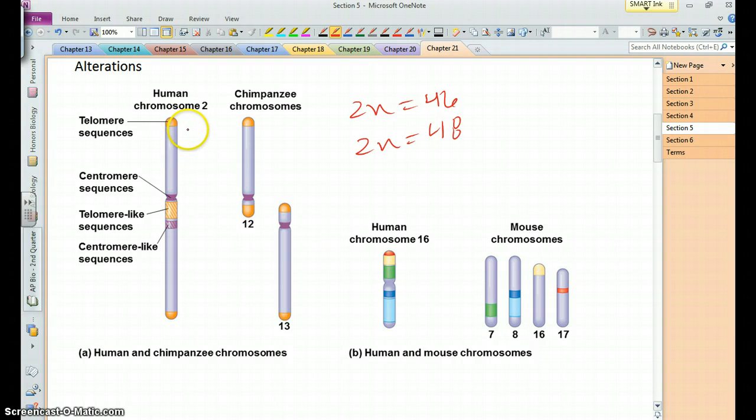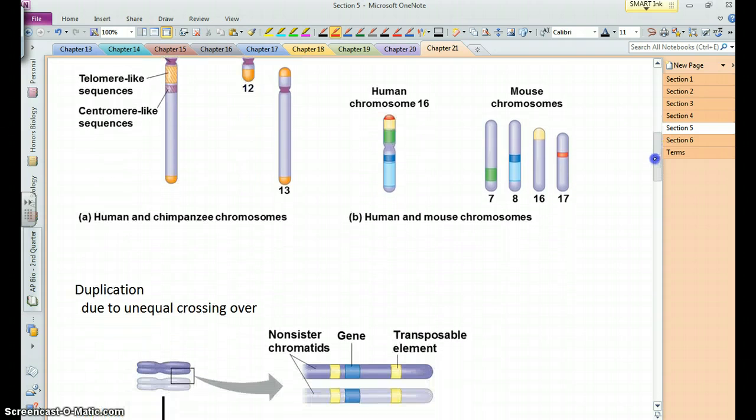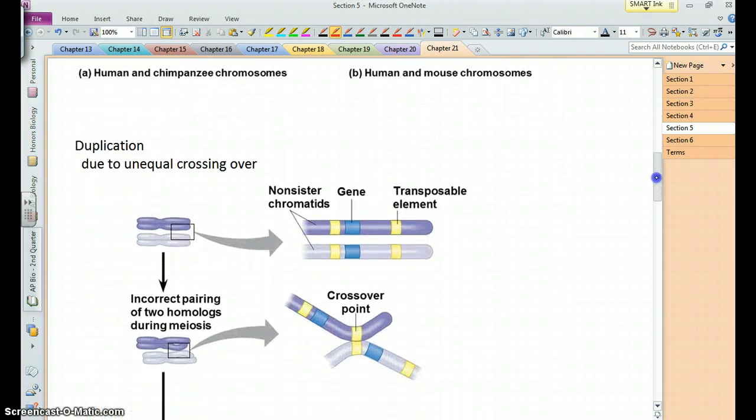But you can see this part is essentially homologous to their chromosome 12, and this part is homologous with their chromosome 13. And a more distant relative of ours, another mammal, the mouse, you can see parts of our chromosome 16 have been distributed to various chromosomes in the mouse, but those little parts would be quite similar.